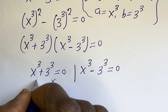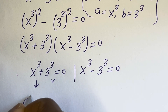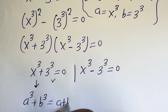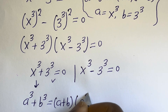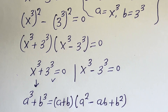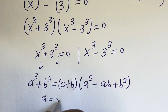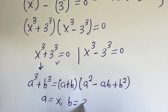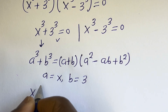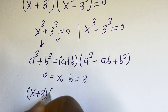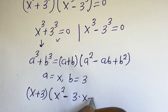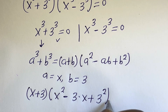Then from the first case, take note of this: if you have a to the power of 3 plus b to the power of 3, this equals (a + b)(a² - ab + b²), where a is equal to x and b is equal to 3. This can be written as (x + 3)(x² - 3x + 9) is equal to 0.